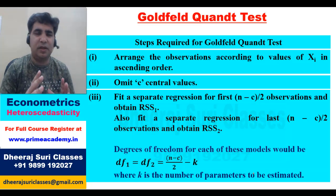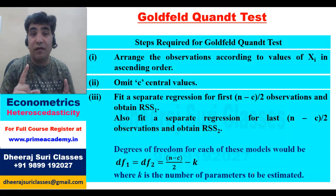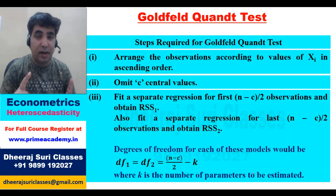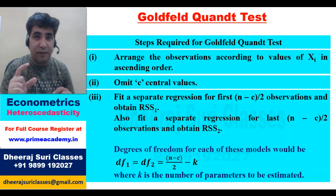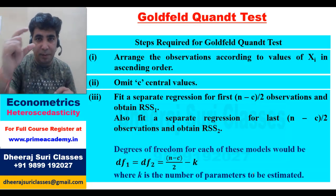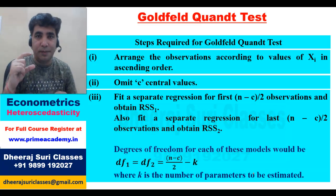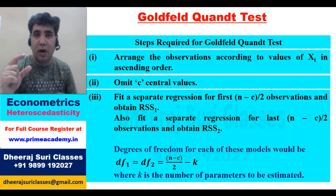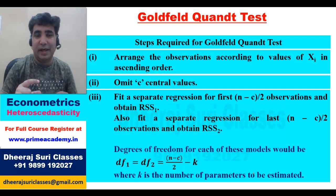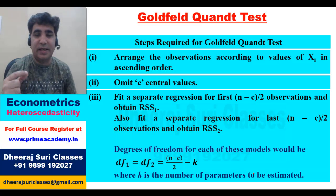Because we have eliminated C values, we now have N−C observations in total. Out of those, (N−C)/2 are in the upper part and (N−C)/2 are in the lower part. For the upper part, fit regression 1 and find RSS1. For the lower part, fit regression 2 and find RSS2.